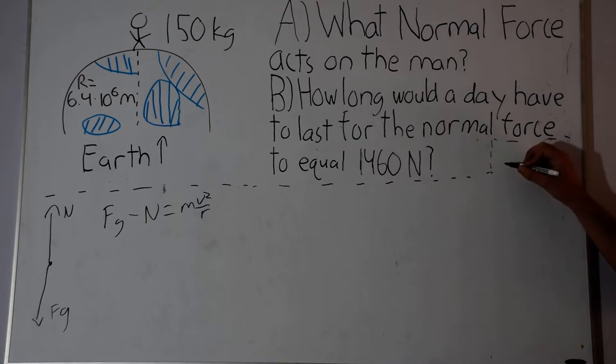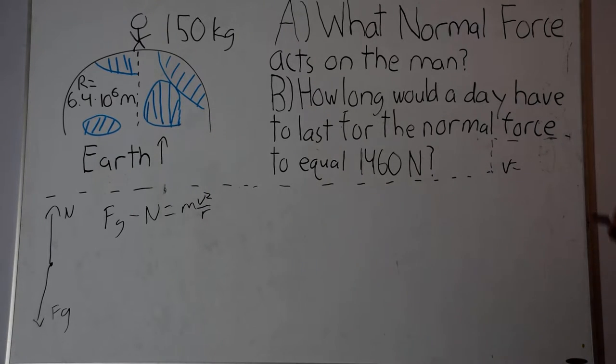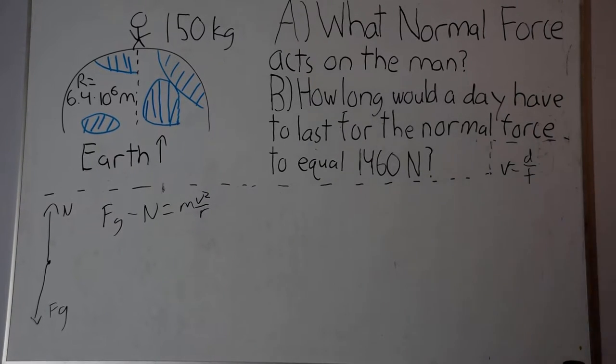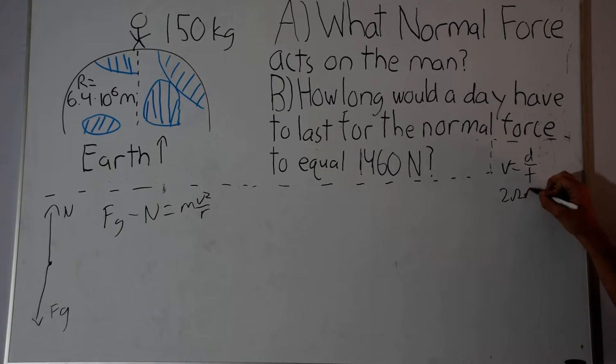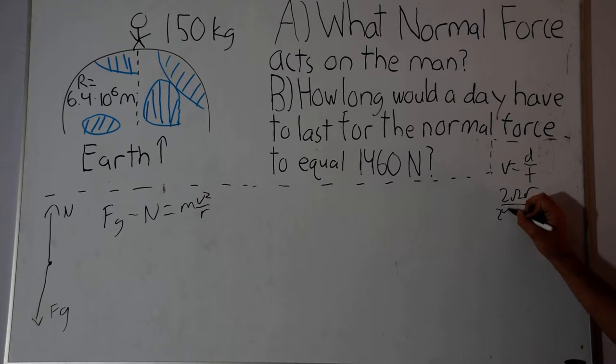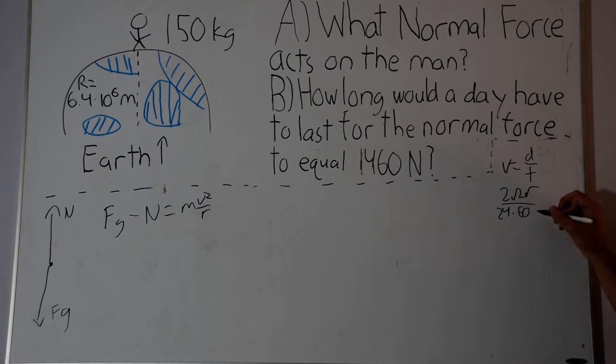We can say that the velocity is just equal to the distance divided by time. We know that this man is going to cover the distance of one circumference of the earth in one day, that's how long it takes the earth to rotate. So we can substitute in the circumference of the earth, which is 2πr, and time in seconds is 24 hours times 60 minutes times 60 seconds. This is just equal to the velocity of the man.